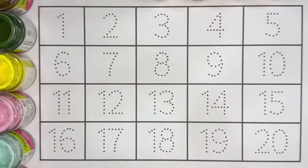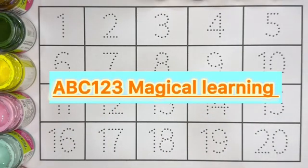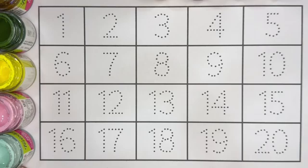Hello kids! Welcome to ABC 123 Magical Learning. Let's learn number counting, 1 to 20 with different tracing and coloring.